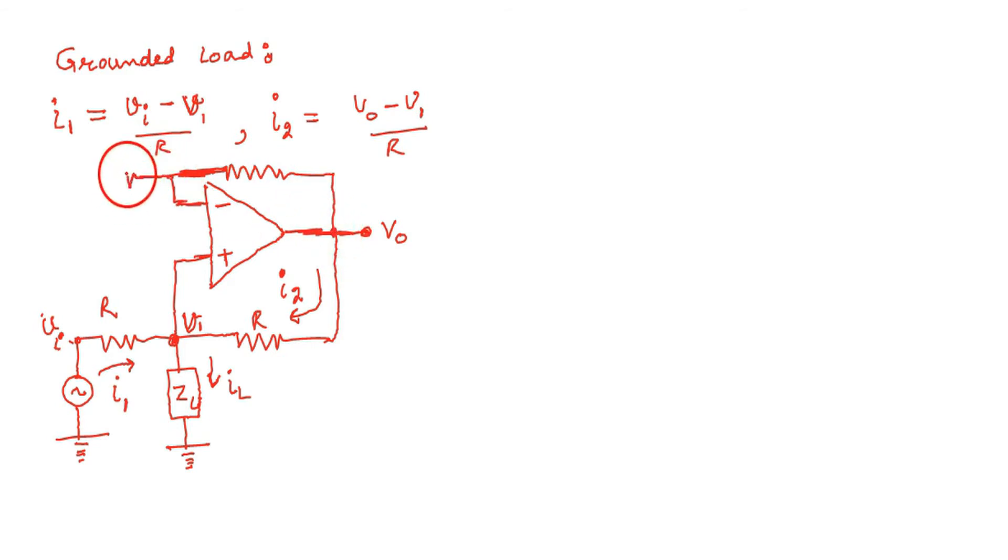Now here our feedback resistor is connected. And second R is grounded. Now here the current is IL. IL is the sum of I1 and I2.